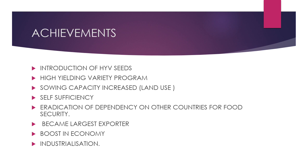What did the Green Revolution achieve? Introduction of high yielding variety seeds — HYV seeds were introduced in the country. The HYV program increased sowing capacity. We achieved self-sufficiency and stopped depending on food imports. India became the largest exporter of wheat, pulses, rice, and vegetables. This is the condition of our agriculture today.